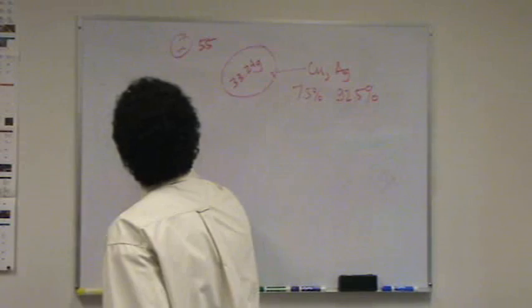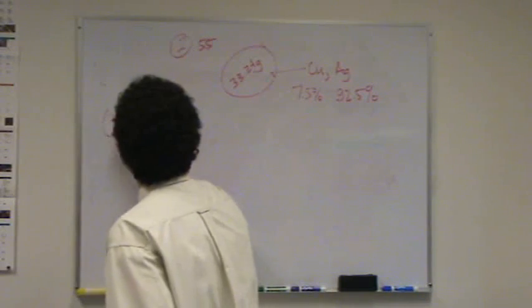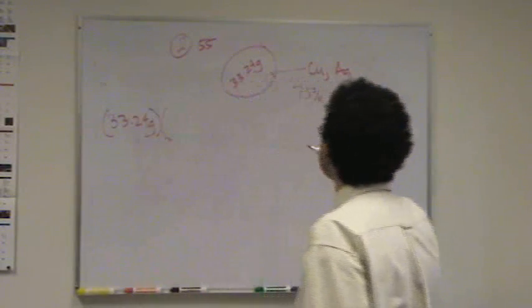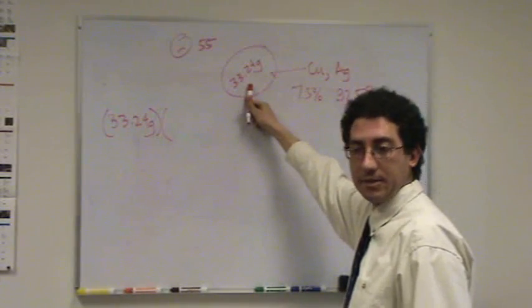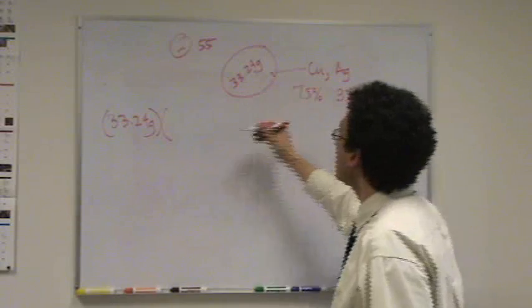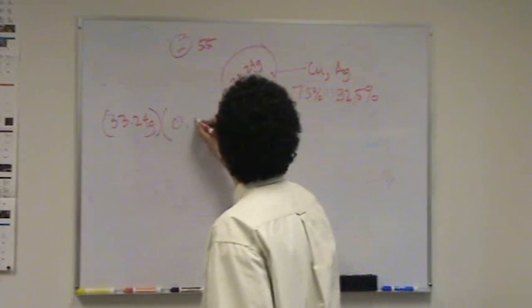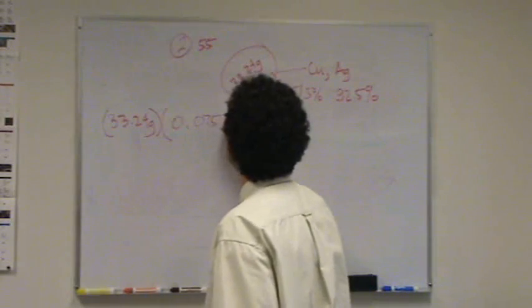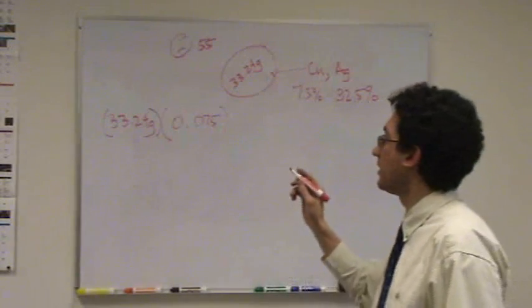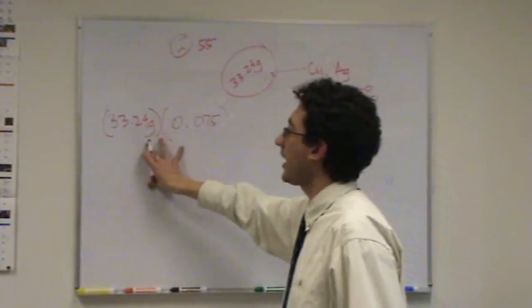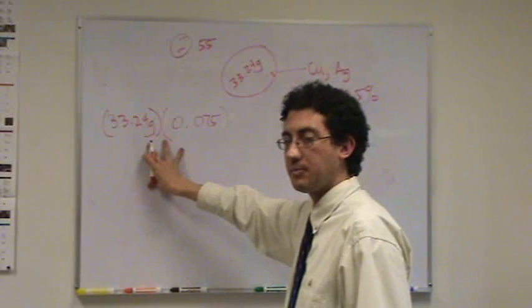So, 33.24 grams. Now, first of all, not all of this is copper, and I'm only interested in copper. So I'm gonna multiply by 0.075 as a decimal, changed from the percent, so that now I know all this mass that's left over is just copper.